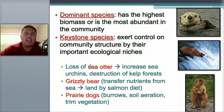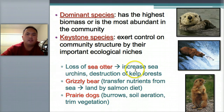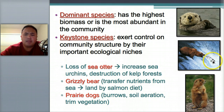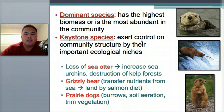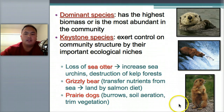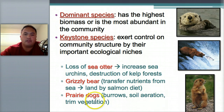A sea otter is a keystone species — if they die, sea urchin populations grow, sea urchins eat kelp, and if the kelp is gone the whole food chain collapses. A grizzly bear is also a keystone species — it eats salmon and transfers energy from water to land. If grizzly bears die, nothing else transfers that energy. Prairie dogs are also keystone species — they burrow, aerate the soil so things can grow, and trim vegetation. If they die, the rest of the food chain dies off.